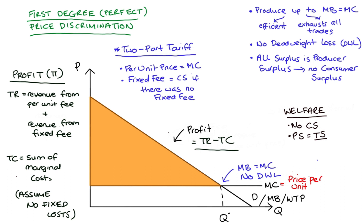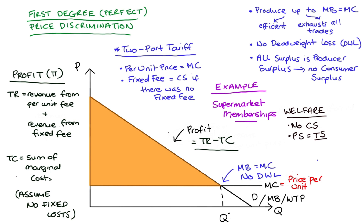To give a real-life example of a pricing strategy that approaches a two-part tariff: sometimes you see supermarkets where you can become a member, and once you're a member you can access groceries at a relatively cheap price. In Australia, we have a supermarket chain called Costco — if you join as a member, it's about $120 Australian dollars, and once you become a member you get access to cheaper prices. These membership supermarkets look like two-part tariffs: lower per-unit prices incentivize consumers to consume more, consuming up towards that efficient level of production and exhausting possible trades, while the membership fee is the producer trying to take the additional willingness to pay not captured in the per-unit price.